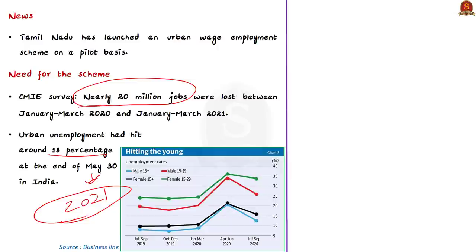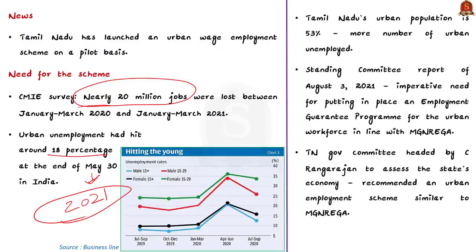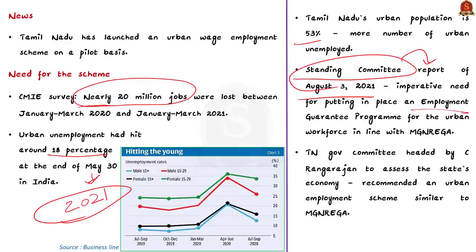Urban unemployment in India was around 18 percent at the end of May 2020. Tamil Nadu's urban population is 53 percent — much higher than the national average — so the number of urban unemployed is higher in Tamil Nadu. This is why the Tamil Nadu government launched the scheme. This scheme was already recommended by the Standing Committee on Labour in Parliament, which submitted a report on August 3rd, 2021, recommending an imperative need for an employment guarantee program for the urban workforce similar to NREGA.